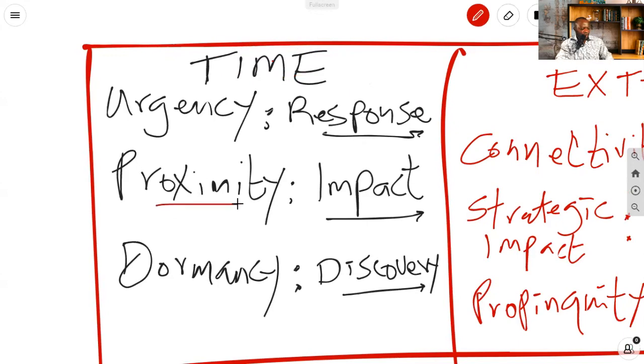In the same token, we can say proximity is all about the time factor before the risk may have an impact on one or more project objectives. So it's the time before there's an impact on the project's objectives. And last but not least, dormancy. Again, it's time before the risk impact is discovered. The period of time that may elapse after a risk has occurred before its impact is discovered. A short period indicates low dormancy.